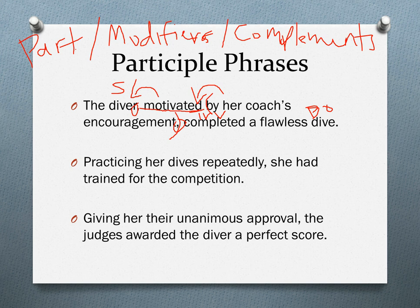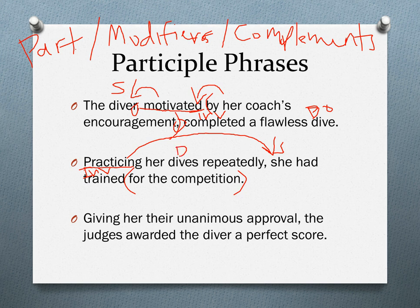In the second sentence, 'she' is the subject, 'had trained' is the verb, and 'for the competition' is a prepositional phrase — an intransitive verb. 'Practicing' has an '-ing' ending and describes the subject 'she,' making it a present participle. 'Dives' is a direct object of 'practicing,' and 'repeatedly' is a modifier describing 'practicing.' So 'practicing her dives repeatedly' is the participle phrase.